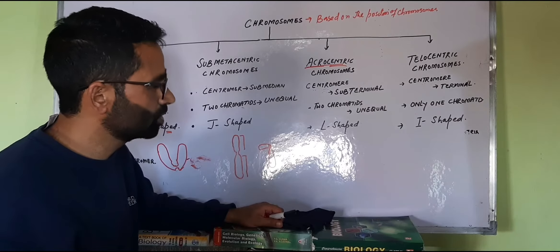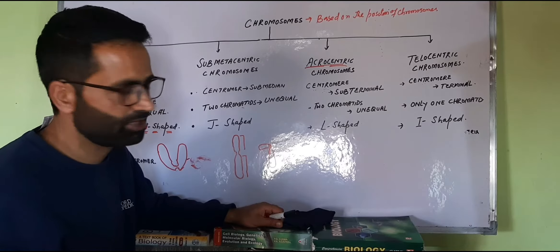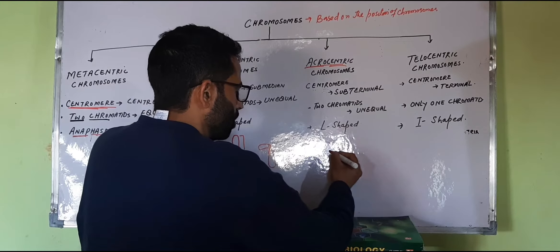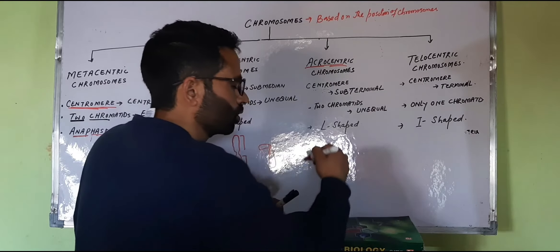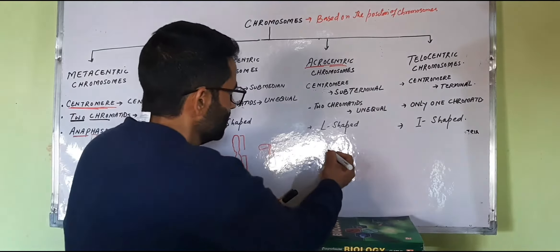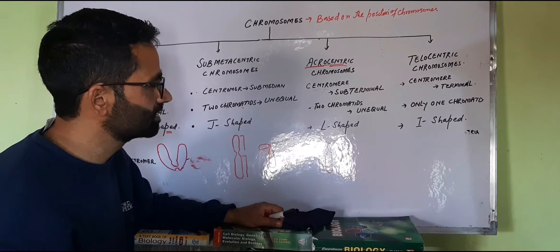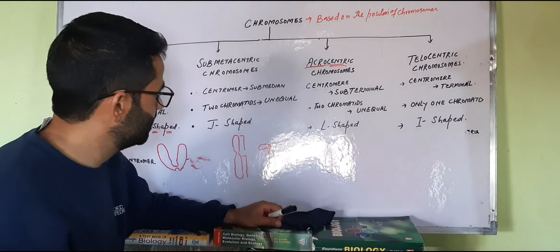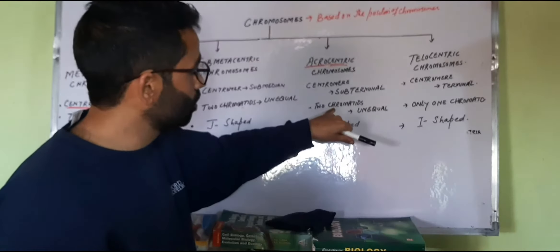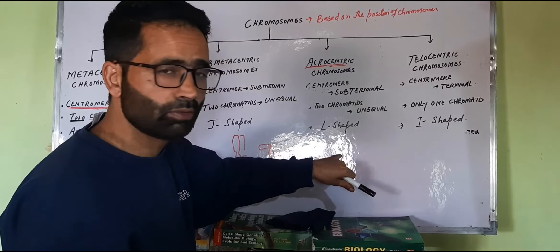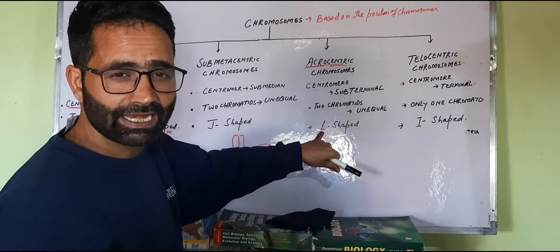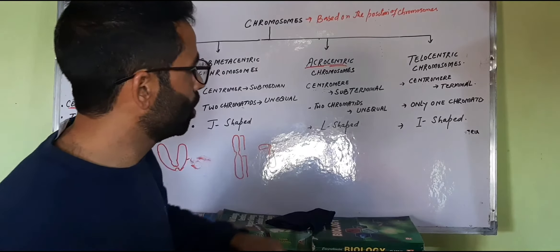The third type of chromosome is the acrocentric chromosome. In acrocentric chromosomes, the centromere is in the sub-terminal position — near one extreme end. As a result, there is a very small arm and a very big arm. One chromatid is very short in size and another chromatid is very long in size. Such chromosomes assume the shape of the letter L during the anaphase stage.